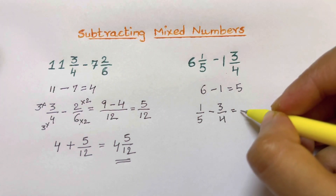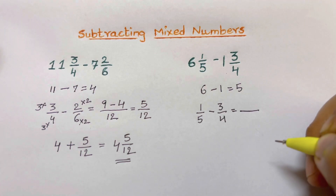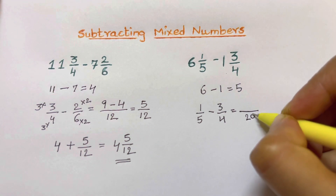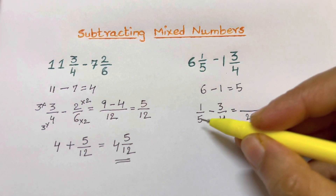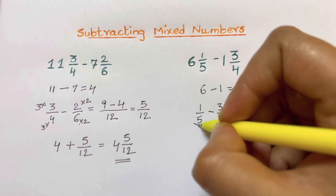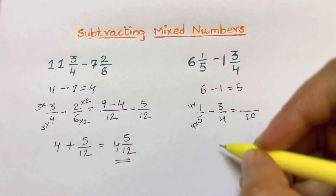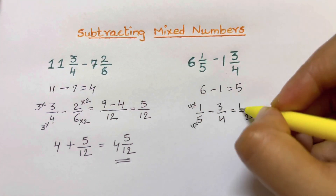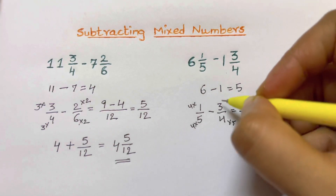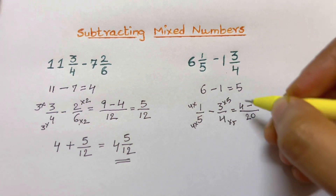We need to make the denominators common, so we take the LCM of 5 and 4, which is 20. To make the first denominator 20, you multiply by 4, and the same with the numerator: 1 times 4 is 4. For the second fraction, 4 times 5 makes 20.